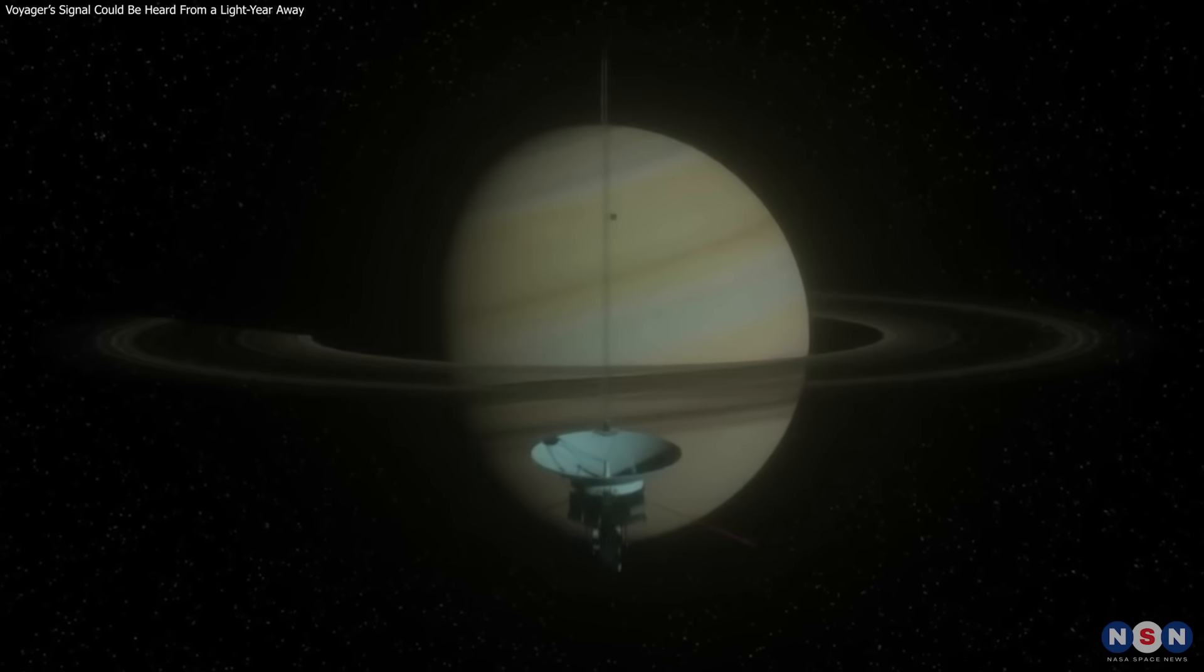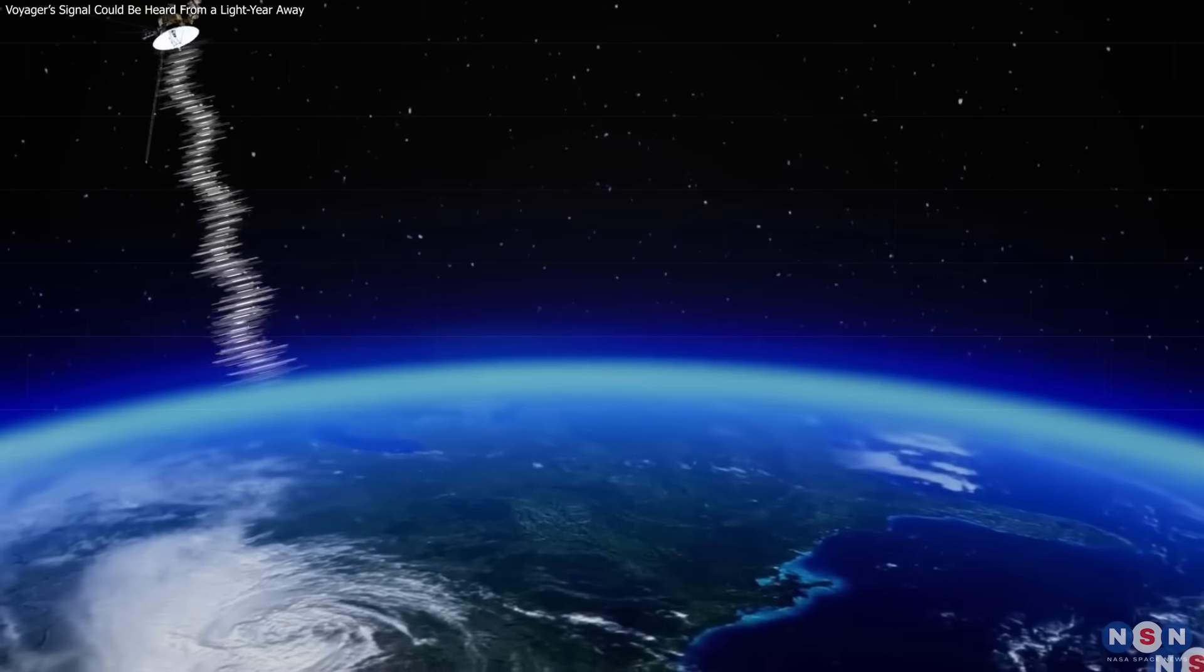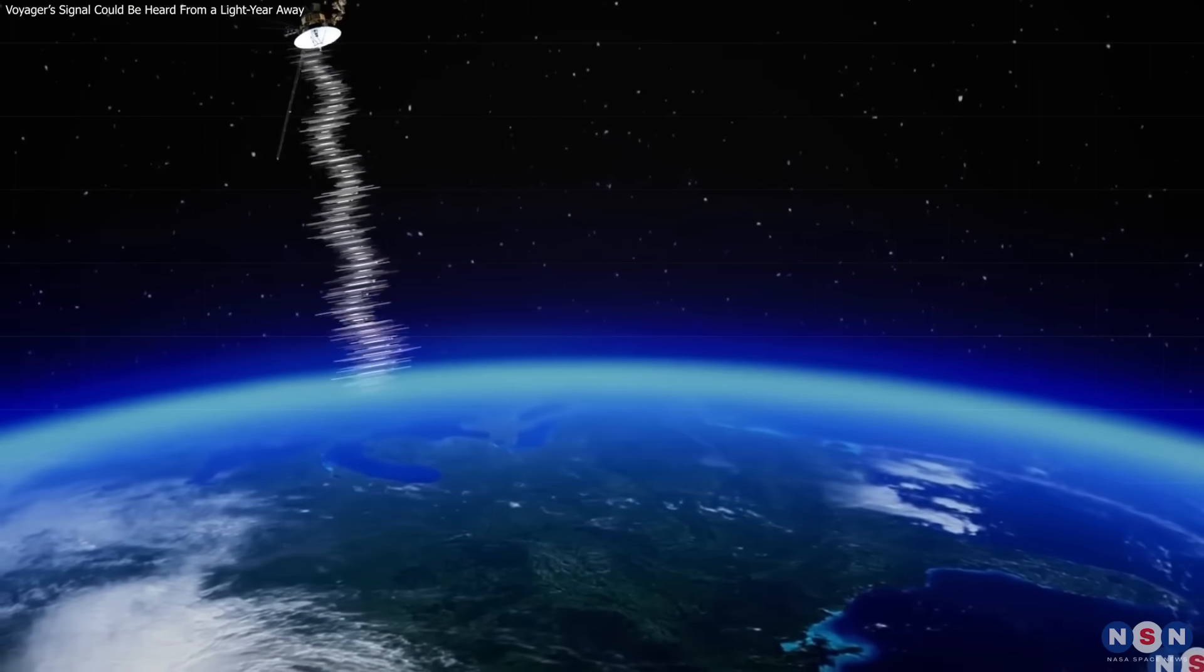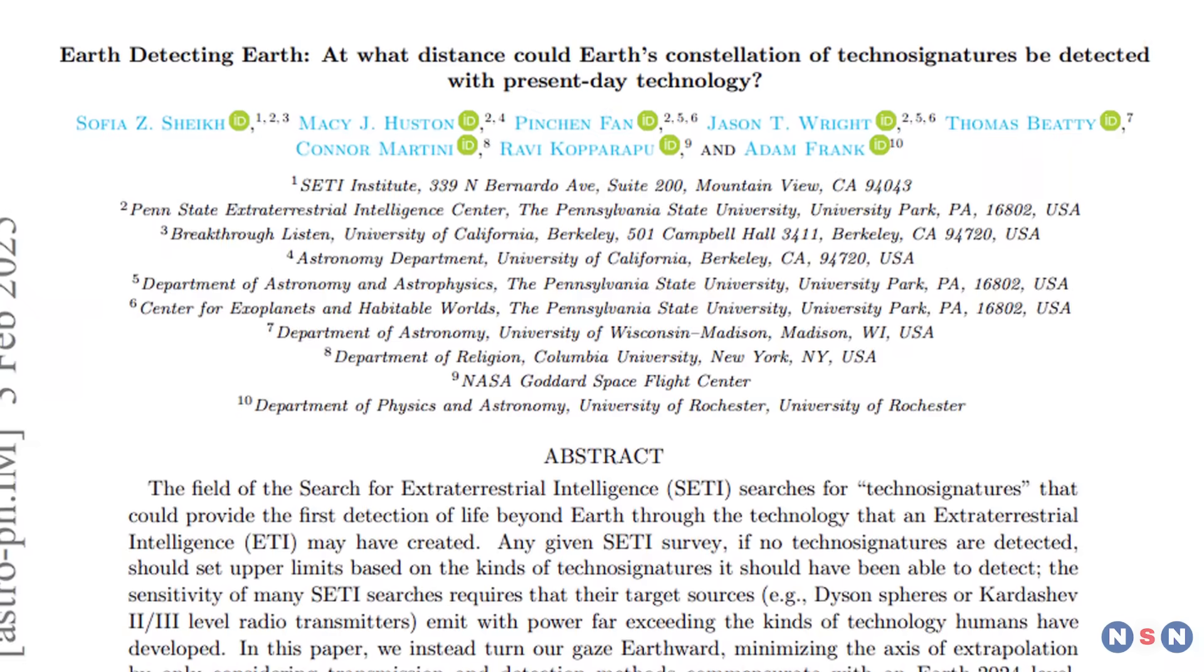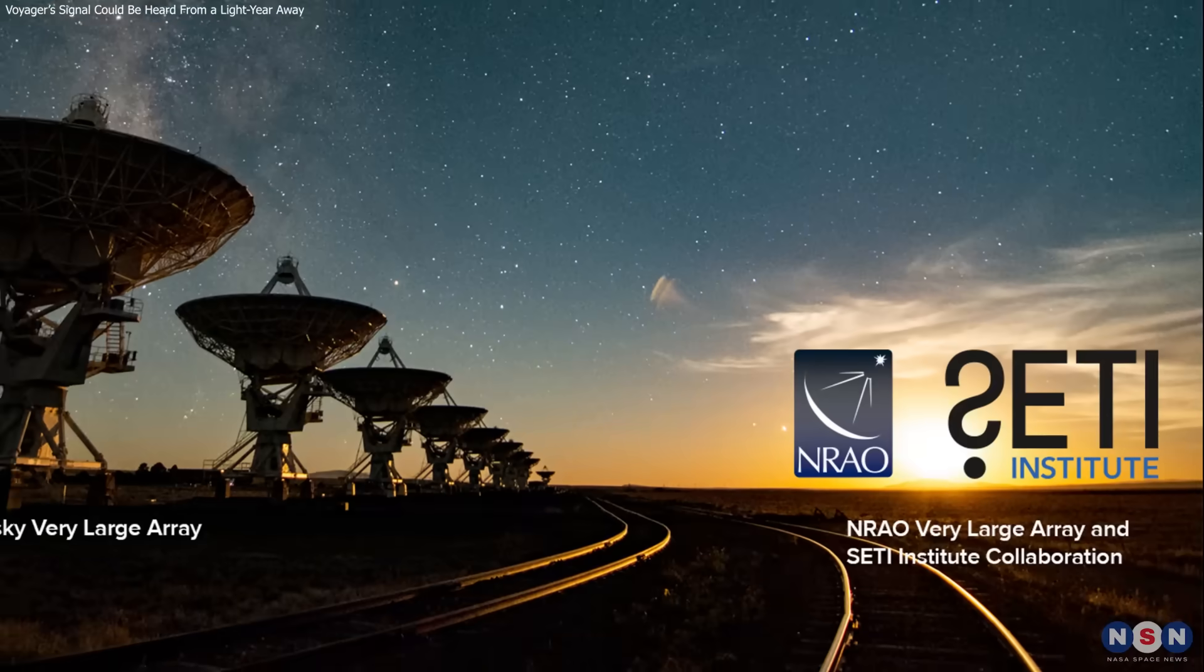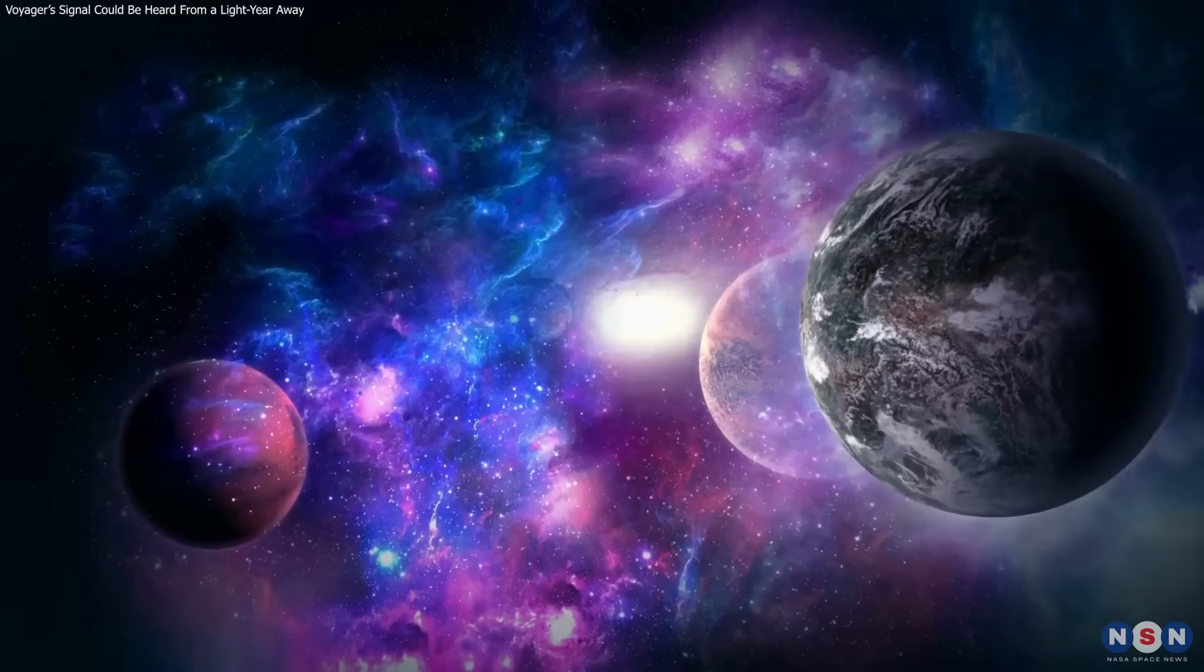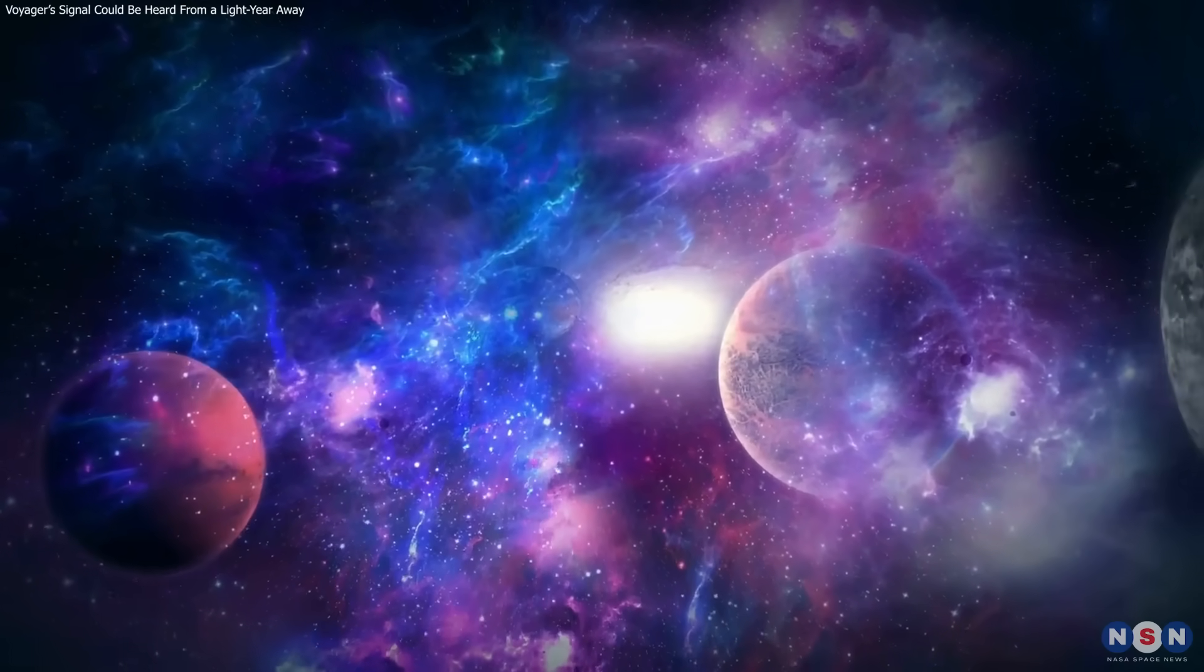The Voyager spacecraft, initially designed for planetary exploration, are now helping us understand the far-reaching impact of our technological signals. This research shows that even weak signals can travel nearly a light year, making them valuable reference points for SETI. As technology advances, we may soon detect similar signals from beyond Earth.